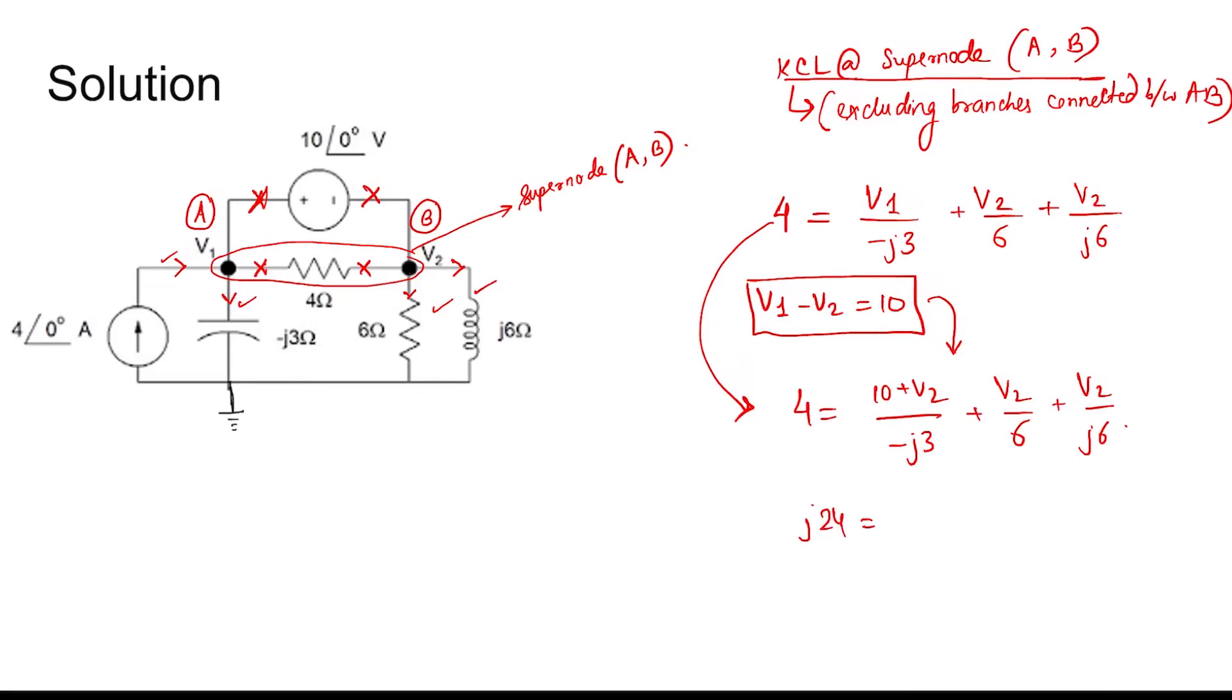Four equals, so j24 equals, this is minus 2, so minus 20 minus 2v2 plus v2, which implies that 20 plus j24 minus v2 plus jv2. So v2 equal to 20 plus j24 divided by j minus 1, into j plus 1 on both sides.